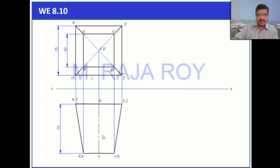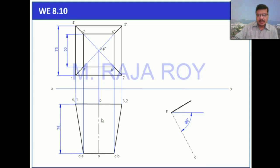In the second stage, reconstruct the top view at an angle of 60 degrees. Take a random line somewhere here and assume a point as p. Draw an inclined line at an angle of 60 degrees — this length is 75 and this point is o. Then draw a perpendicular to op.